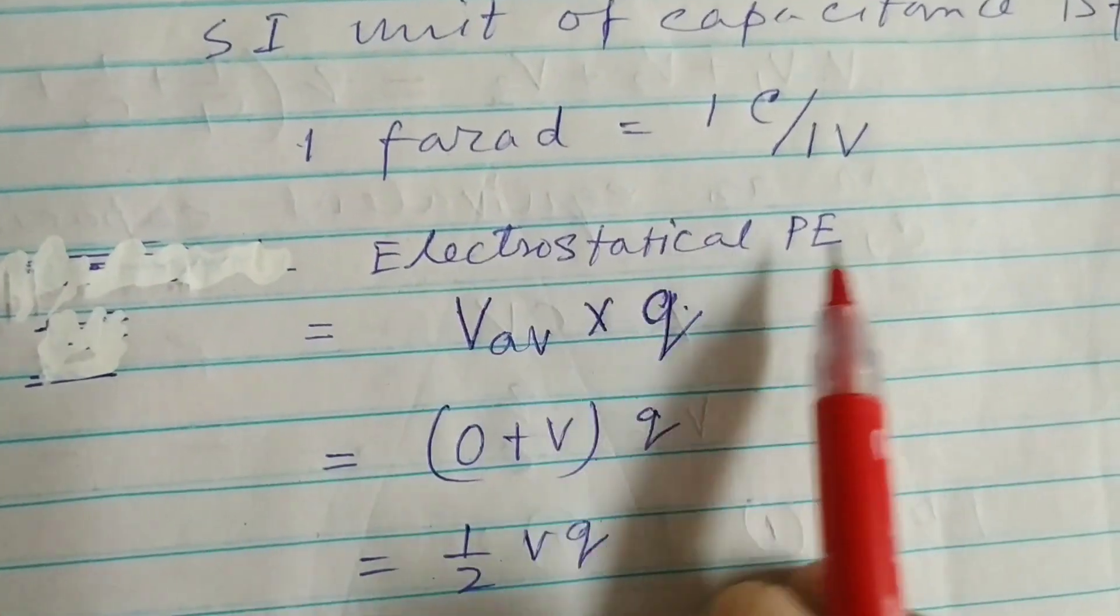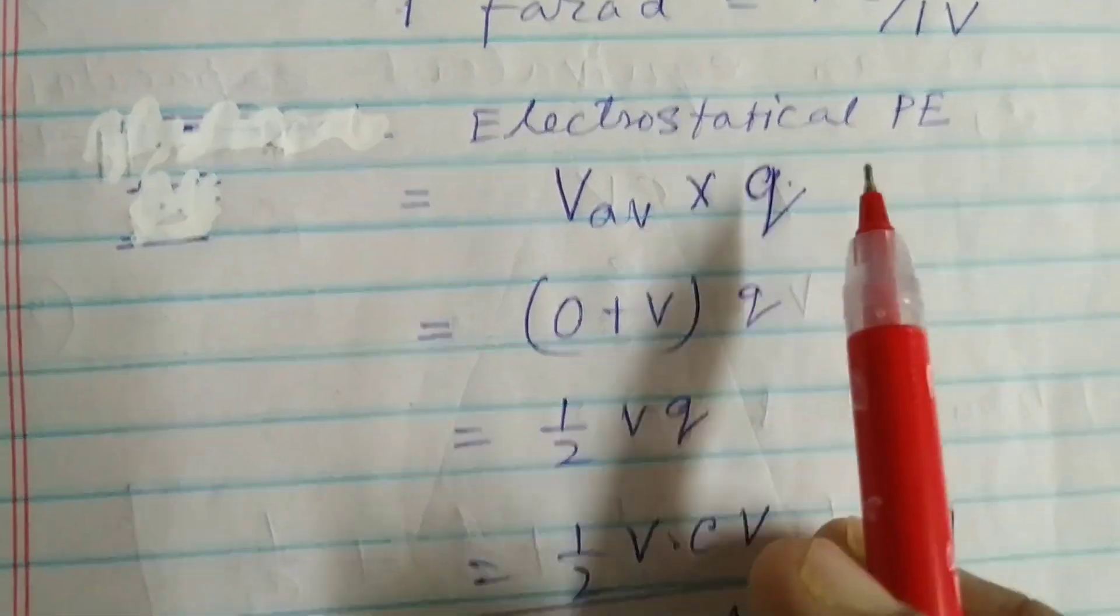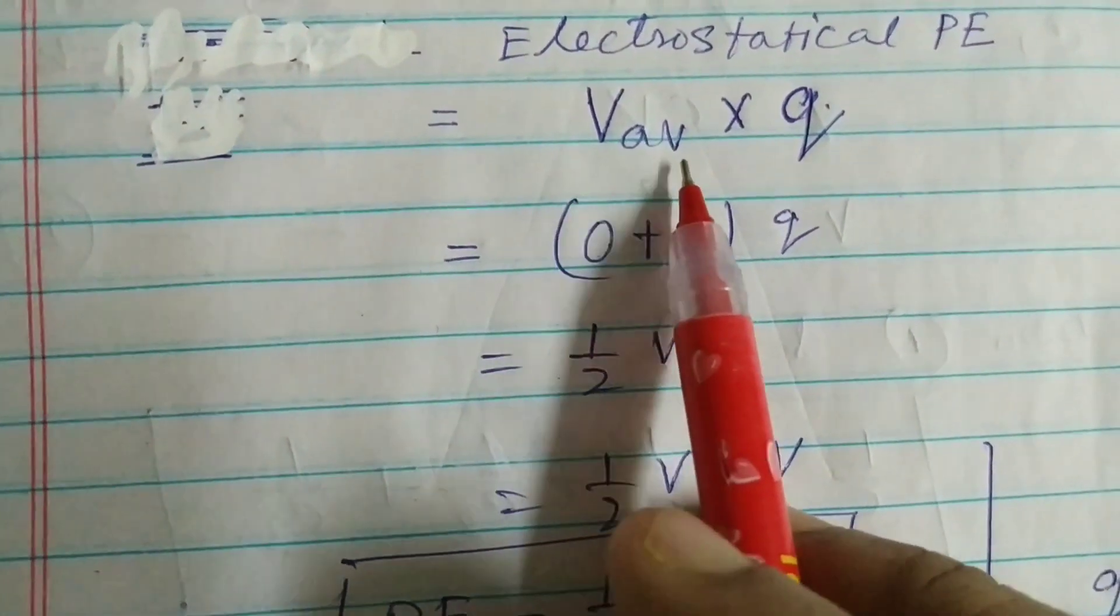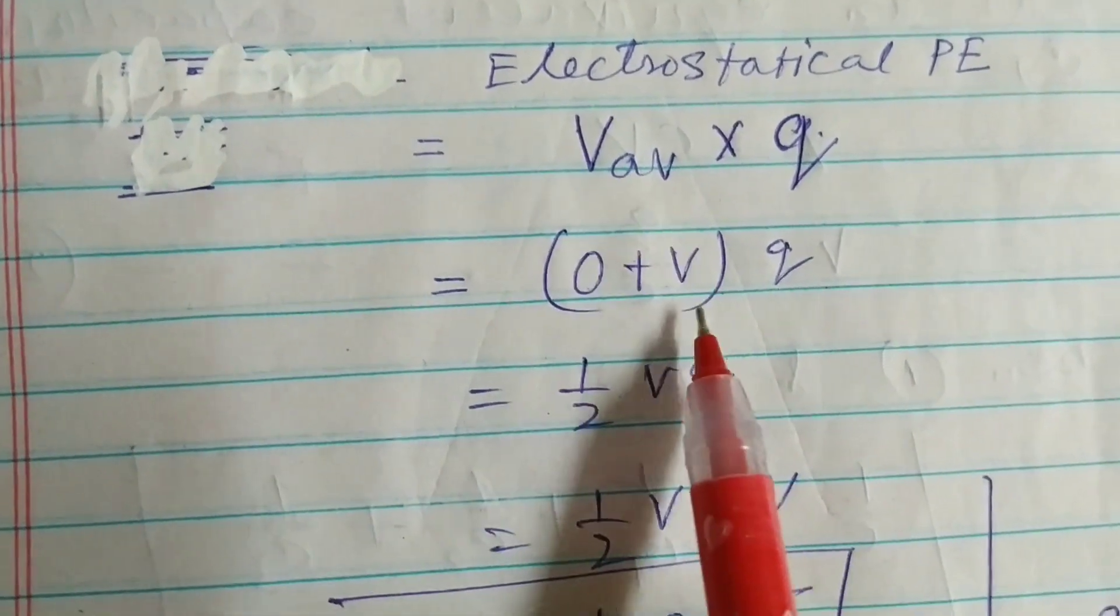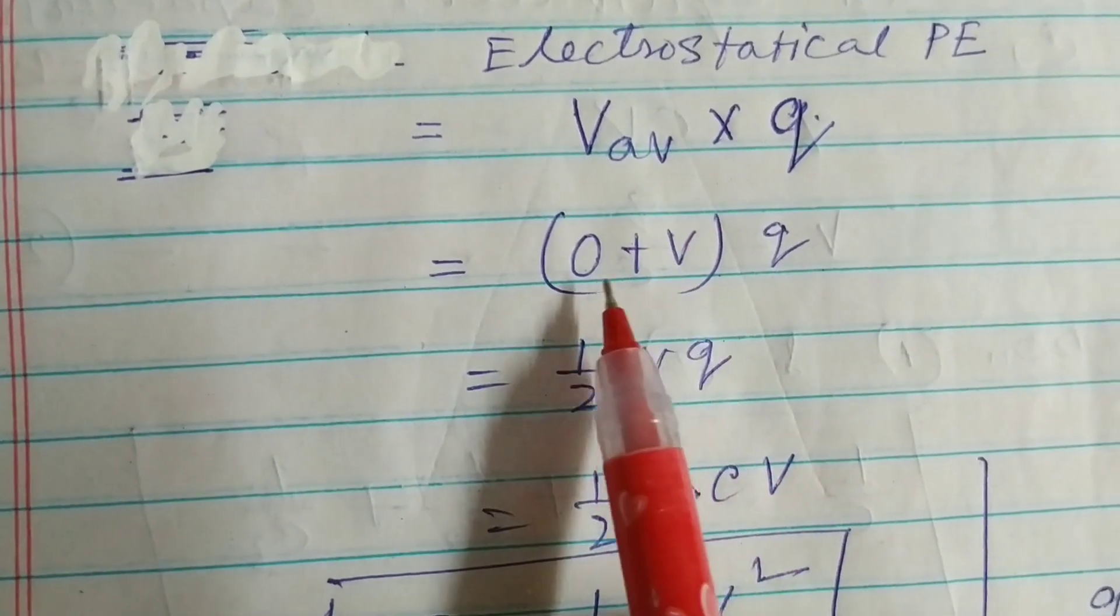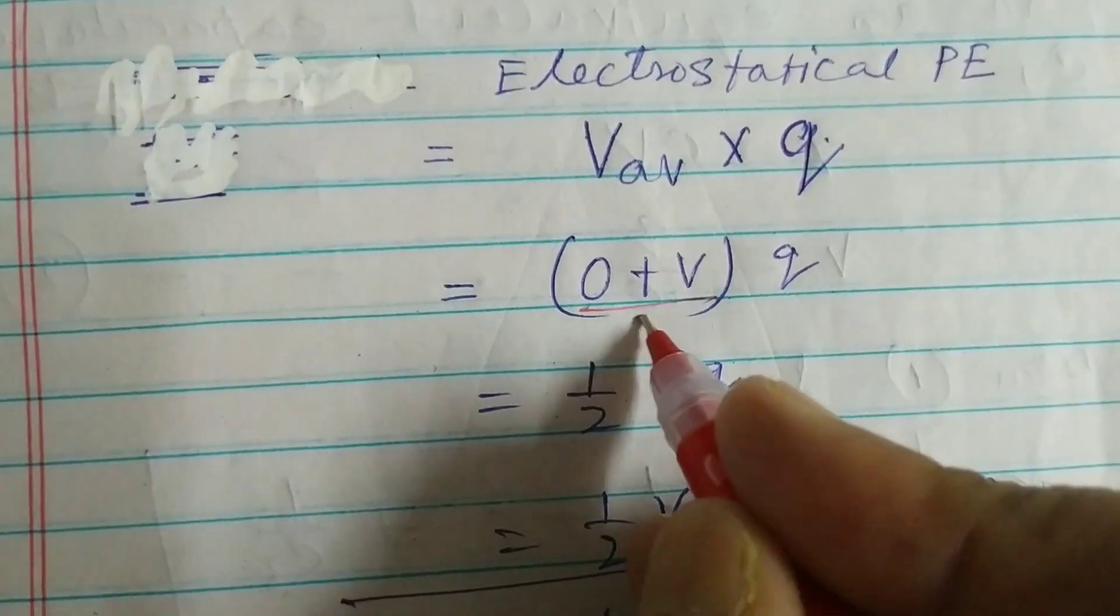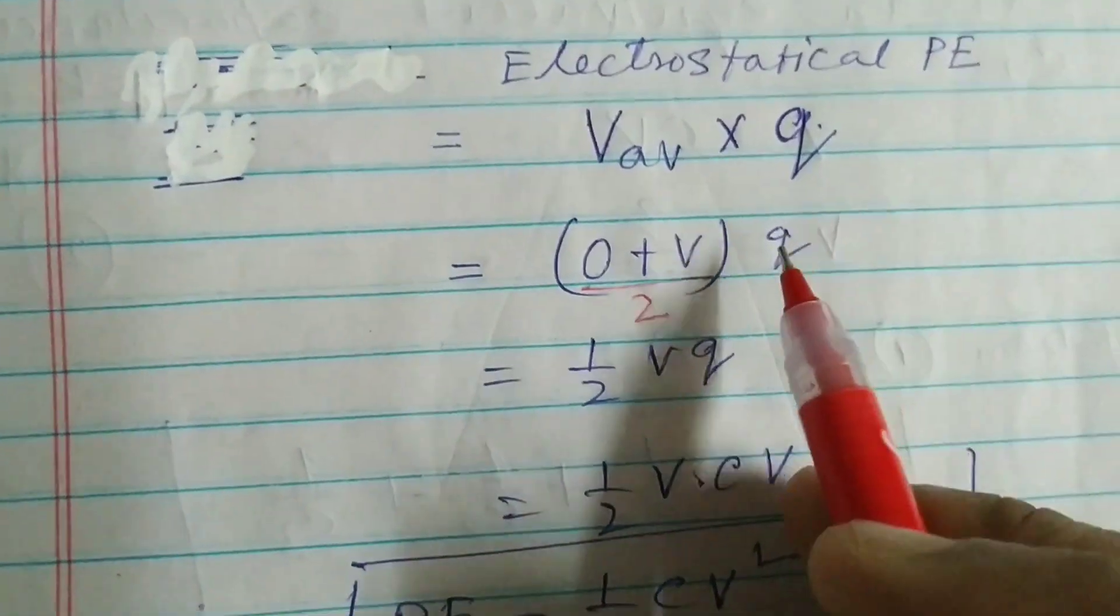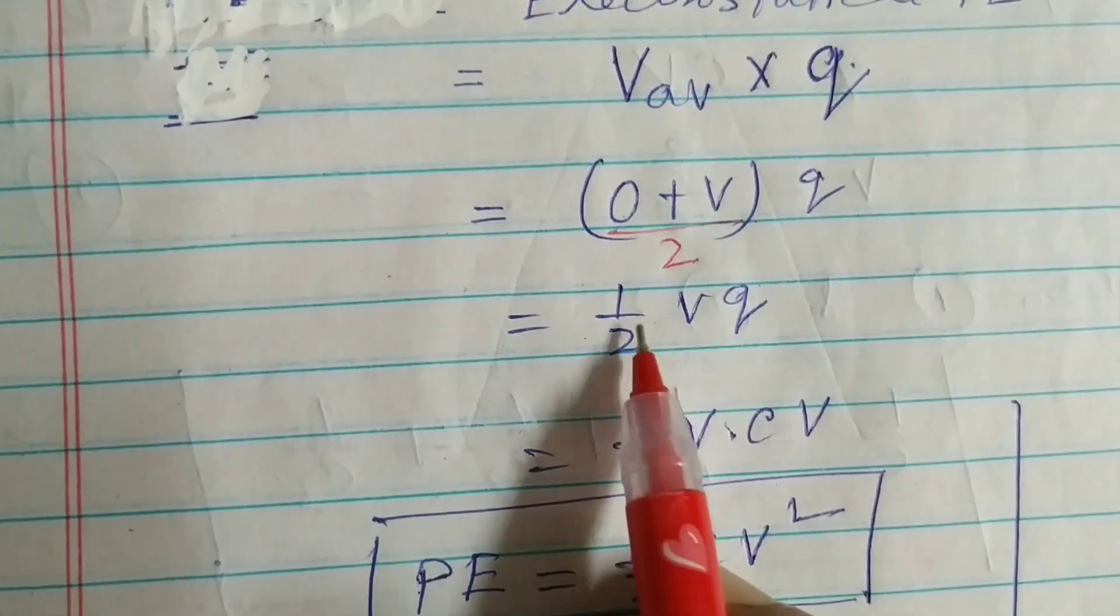Now electrostatic PE, that is electrostatic potential energy, is V average into Q. In the beginning V is zero and finally the potential is V. So what is the average? It will be zero plus V by two into Q. So it will be V by two into Q, means half VQ.